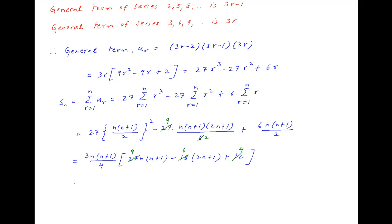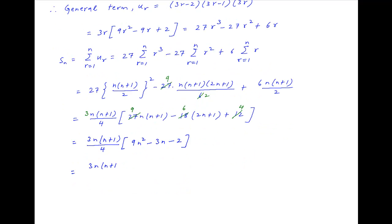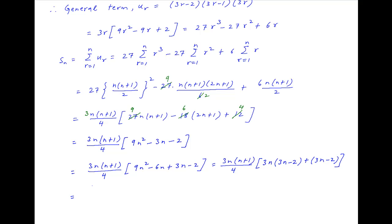Therefore Sn is equal to 3n(n+1)/4 multiplied by (9n squared minus 3n minus 2). This can be factored as 3n(n+1)/4 times (3n minus 2)(3n plus 1), giving the final answer: Sn = (3n/4)(n+1)(3n minus 2)(3n plus 1).